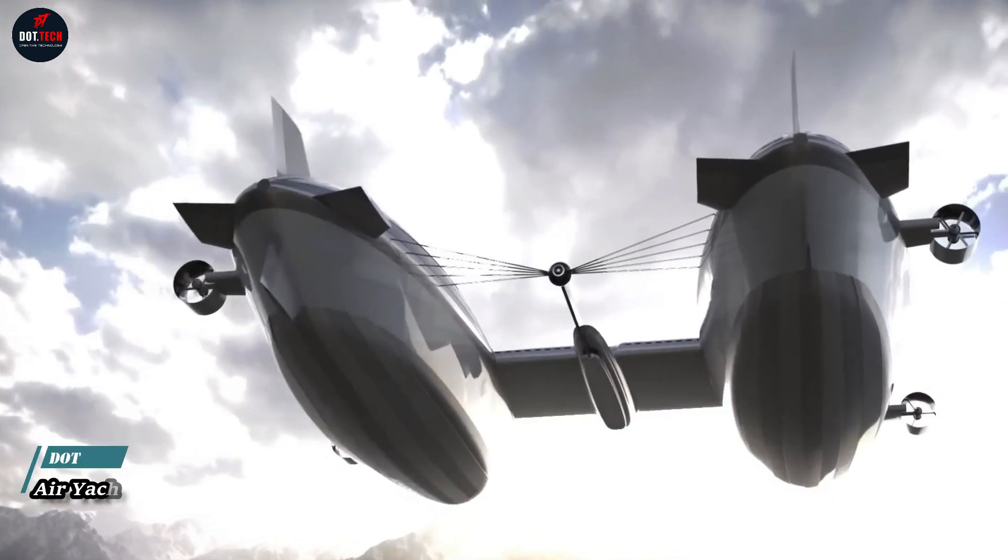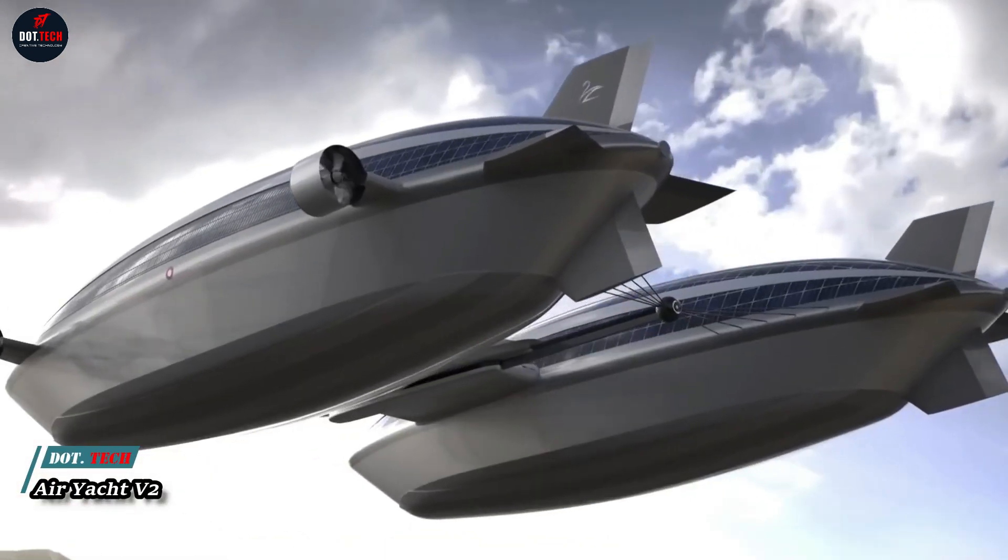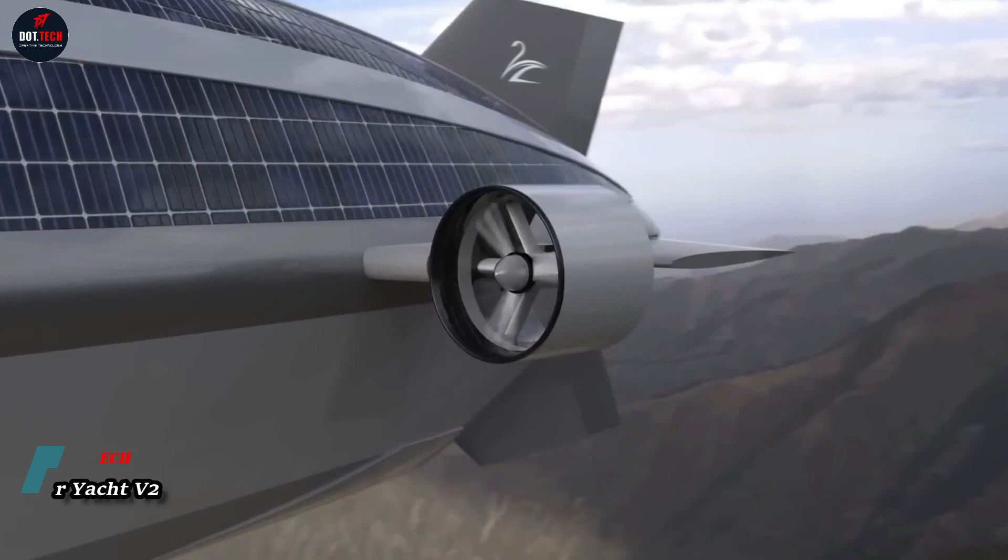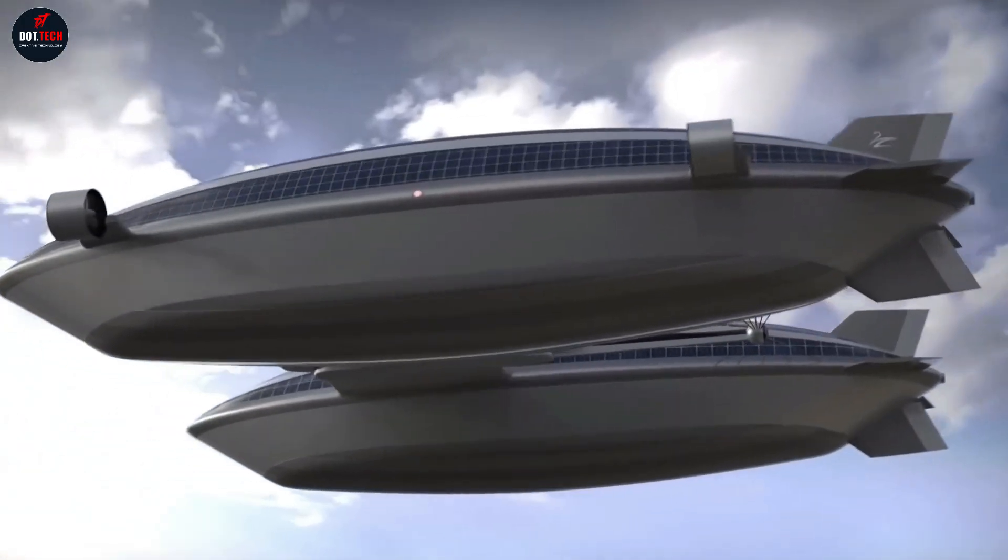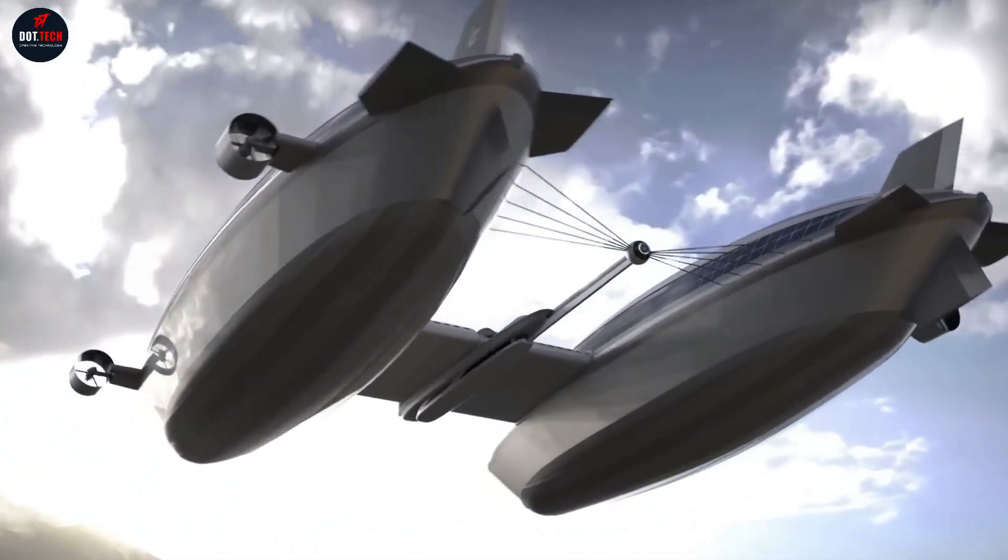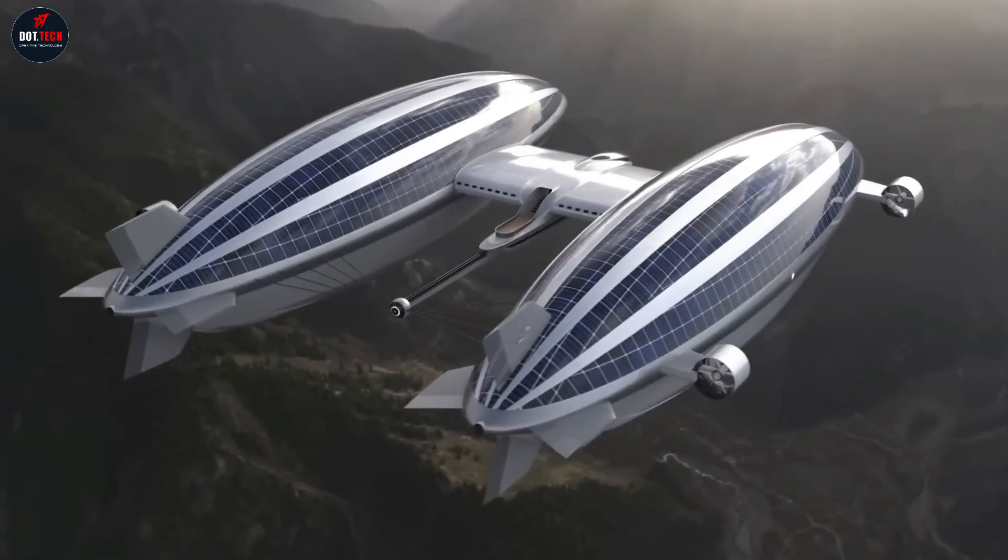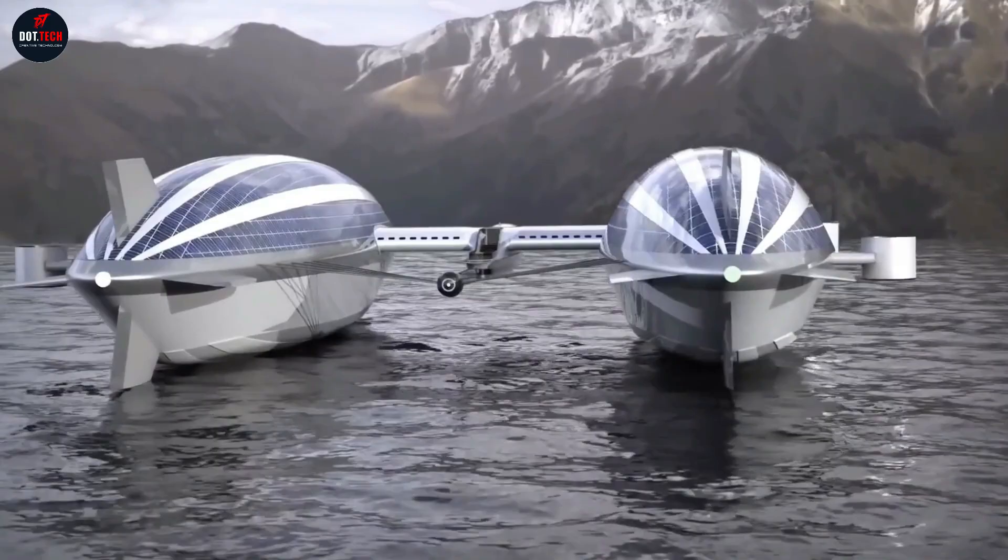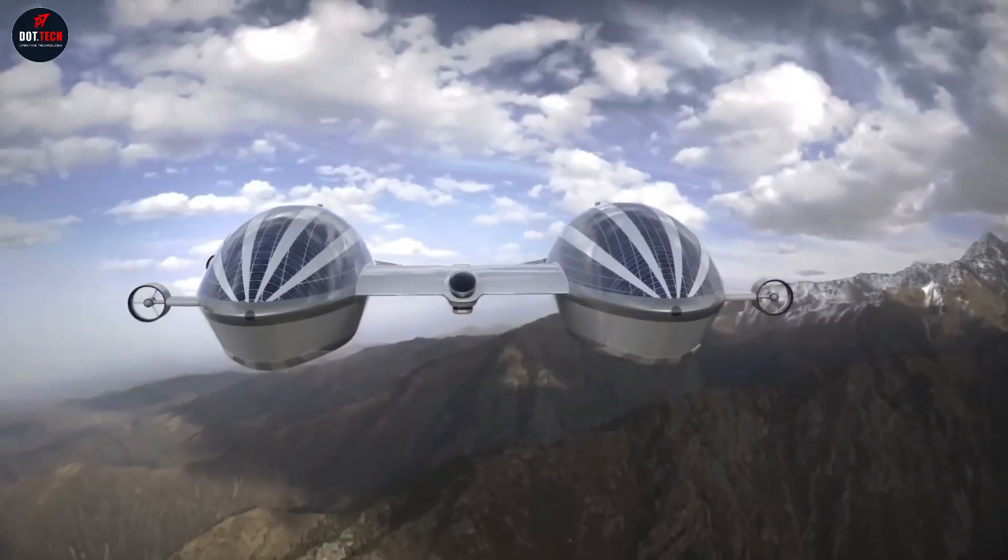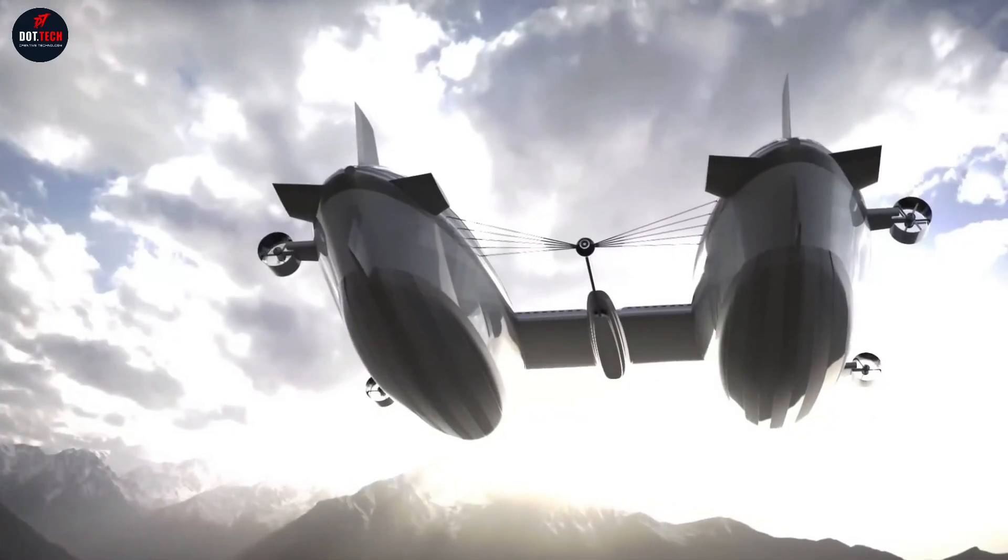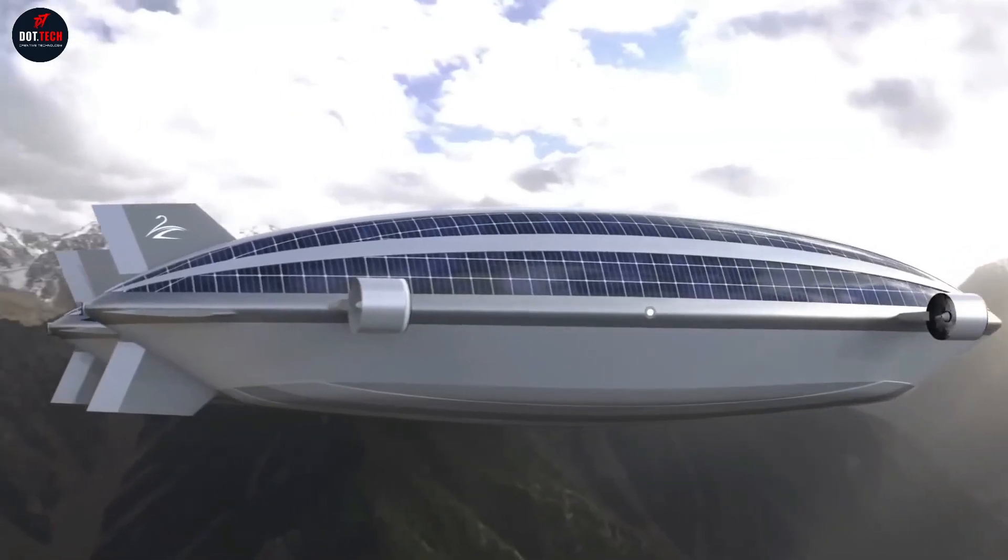Our European tour continues. Next stop, Italy. Lazzarini, a design studio, presents an advanced amphibious yacht concept, capable of navigating both water and air. Supported by two 555-foot shells, resembling airships, and eight 950-horsepower electric motors, the yacht utilizes solar panels for power.